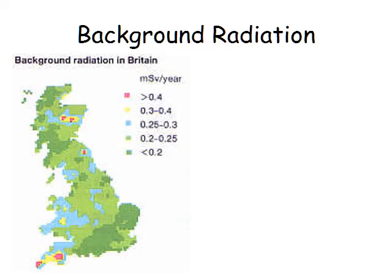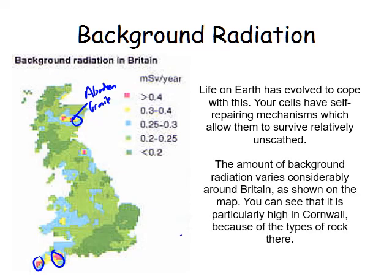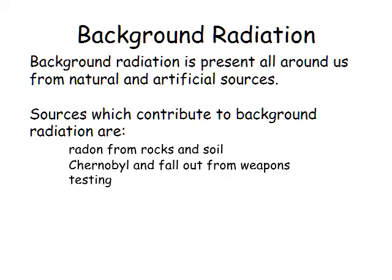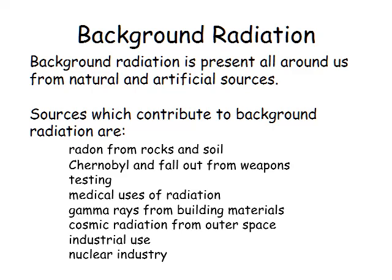Looking at a background radiation map of the UK, you can see red areas around Aberdeen and Cornwall — this is because of granite rocks, which are naturally radioactive. Background radiation is naturally occurring radiation all around us; some is natural and some is from artificial sources. Typical sources include radon from rocks and soil, fallout from weapons testing, medical uses of radiation, gamma rays from building materials, cosmic radiation from space, industrial use, food, and the nuclear industry.